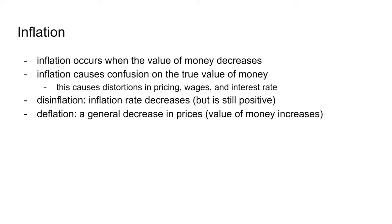Inflation occurs when the value of money decreases — everything gets more expensive because your money is worth less. Inflation is bad for the economy because it causes confusion around wages, interest rates, and pricing. Disinflation is when the inflation rate slows but you still have inflation, and deflation is the opposite of inflation — when prices all go down.